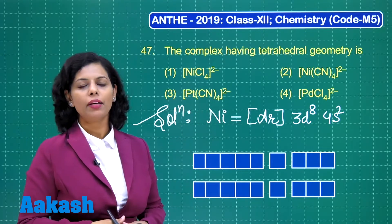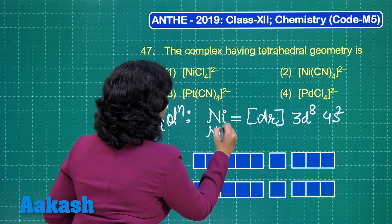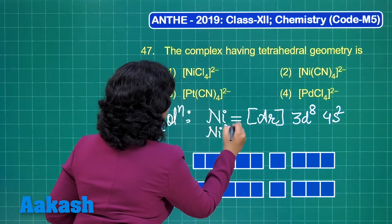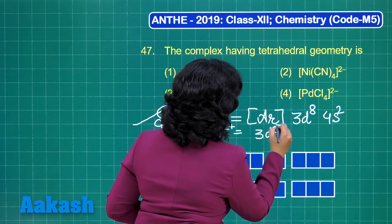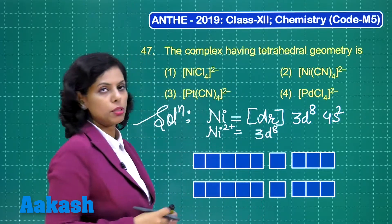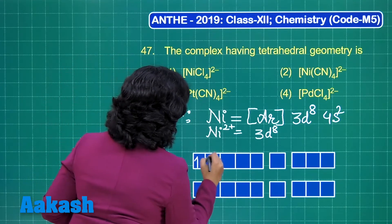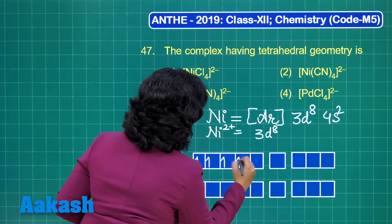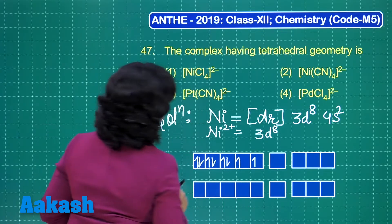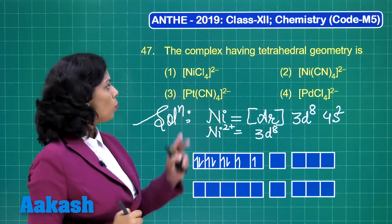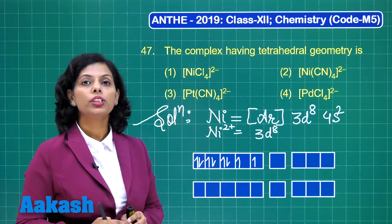In the plus two oxidation state, nickel has eight electrons in the d sub-shell. We can fill these eight electrons into the d orbitals. Now we consider the two ligands: chloride (Cl⁻) and cyanide (CN⁻).